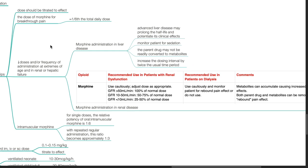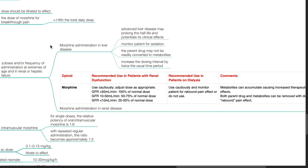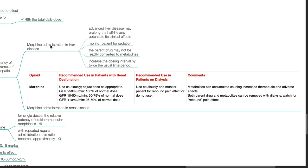Reduction in dosage and or frequency of administration at extremes of age and in renal or hepatic failure. Morphine administration in liver disease. Advanced liver disease may prolong the half-life and potentiates morphine's clinical effects. Monitor the patient for sedation. The parent drug may not be readily converted to metabolites. Increase the dosing interval by twice the usual time period.